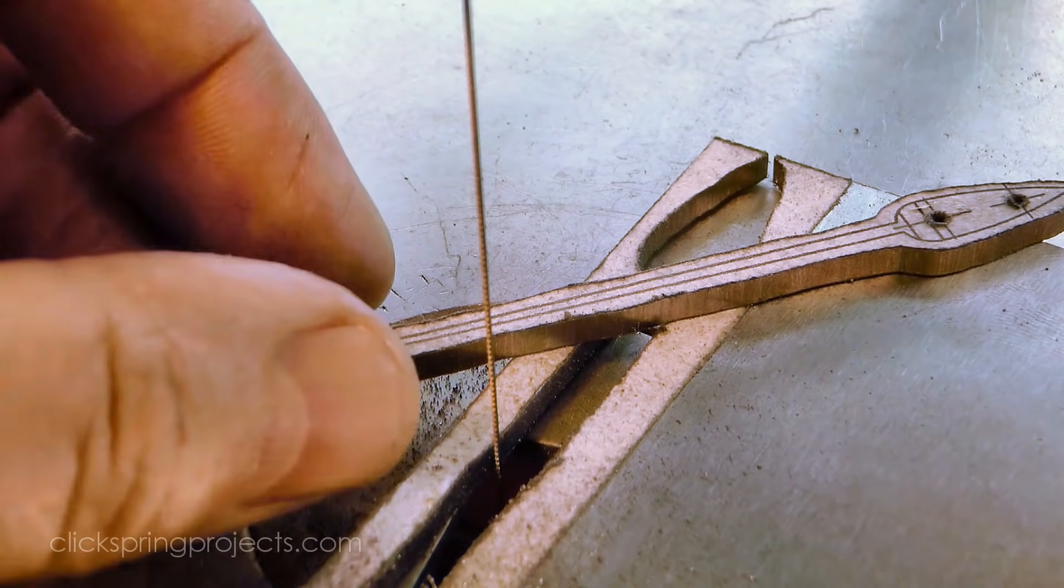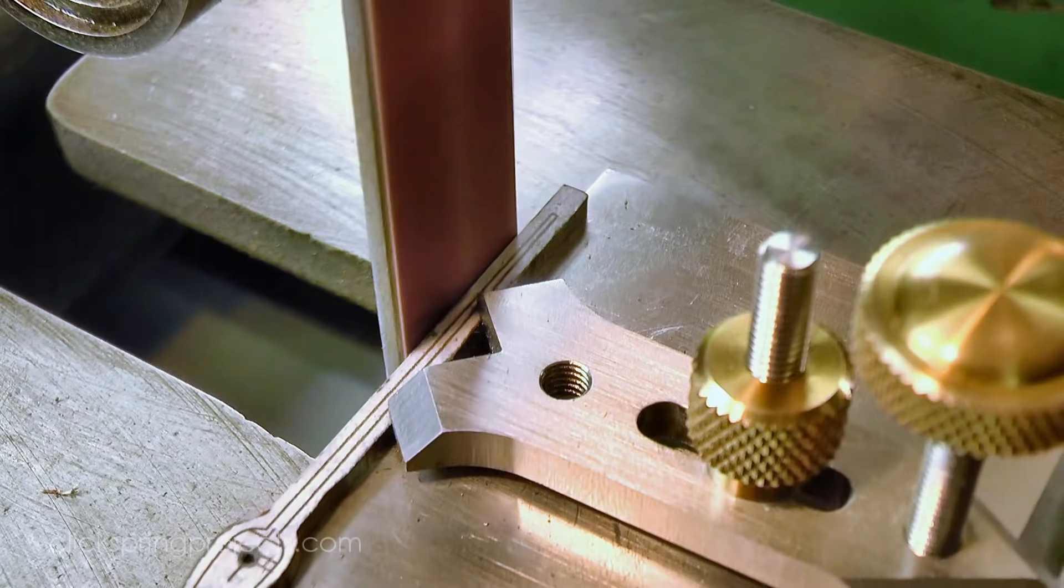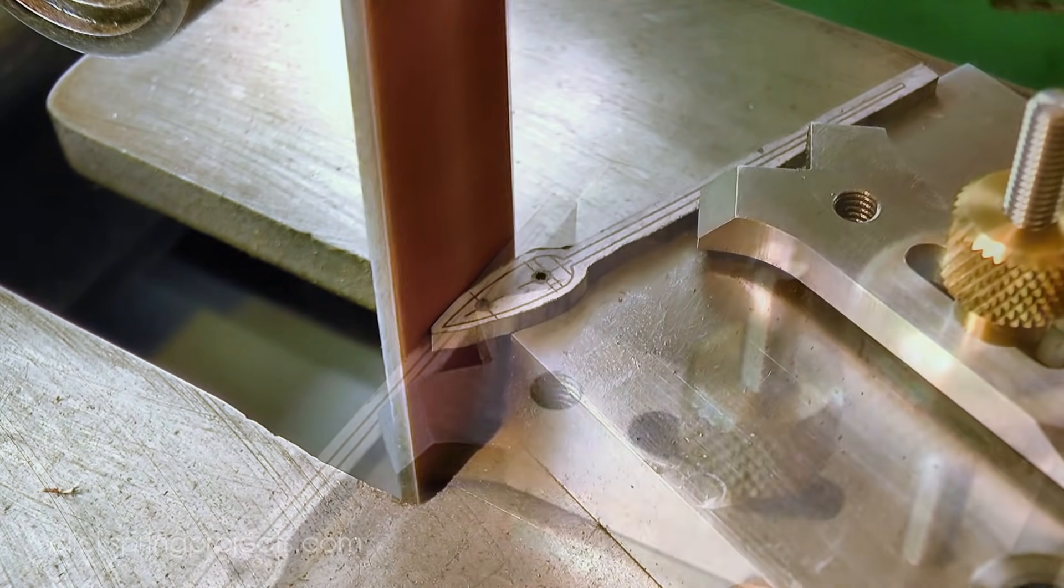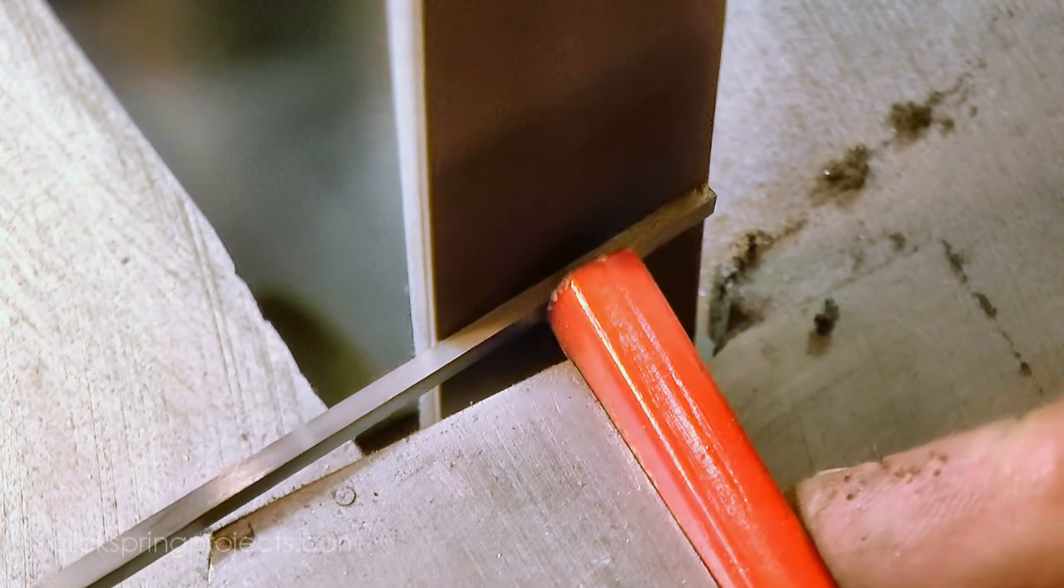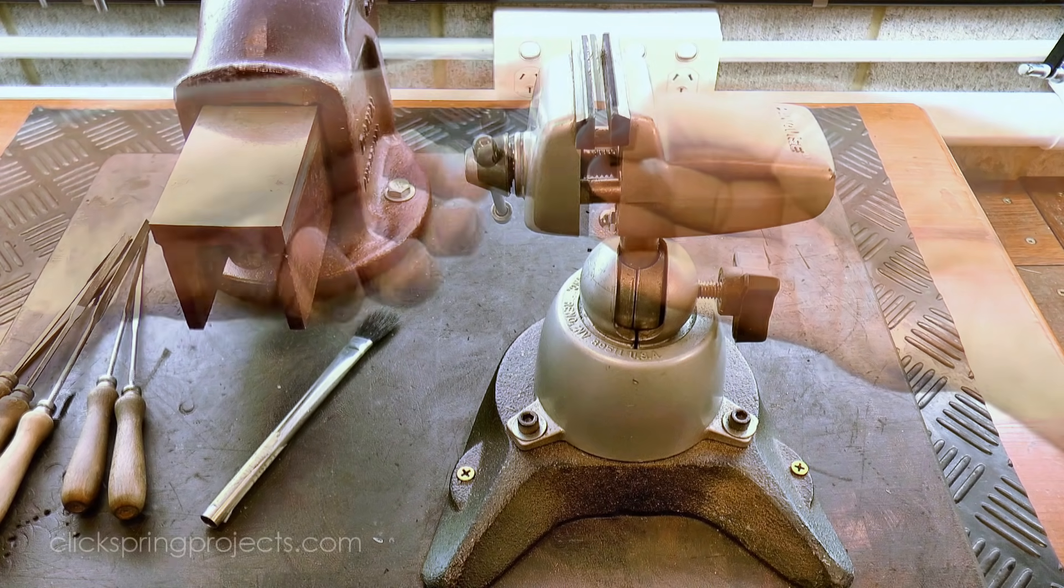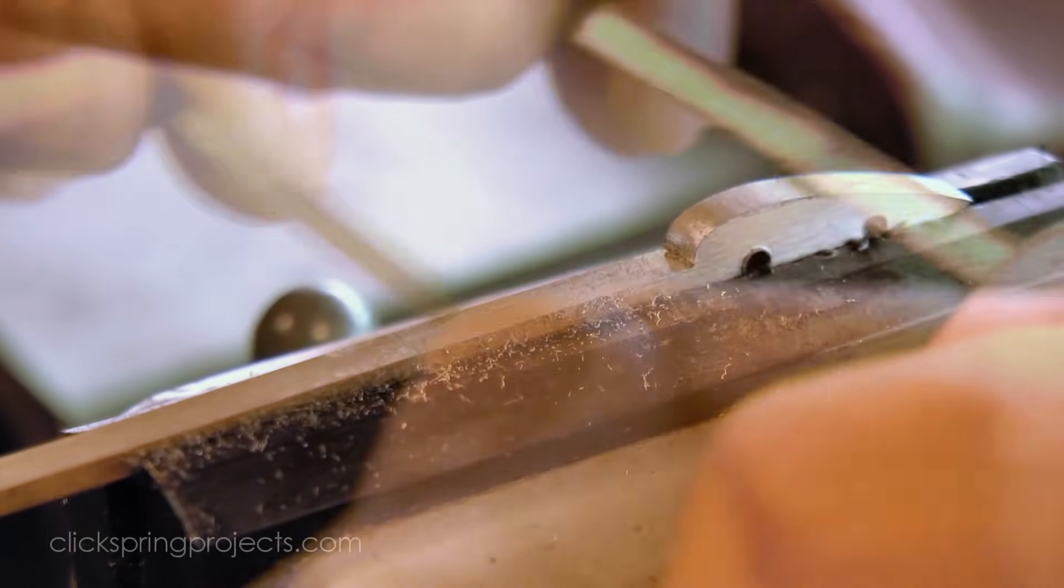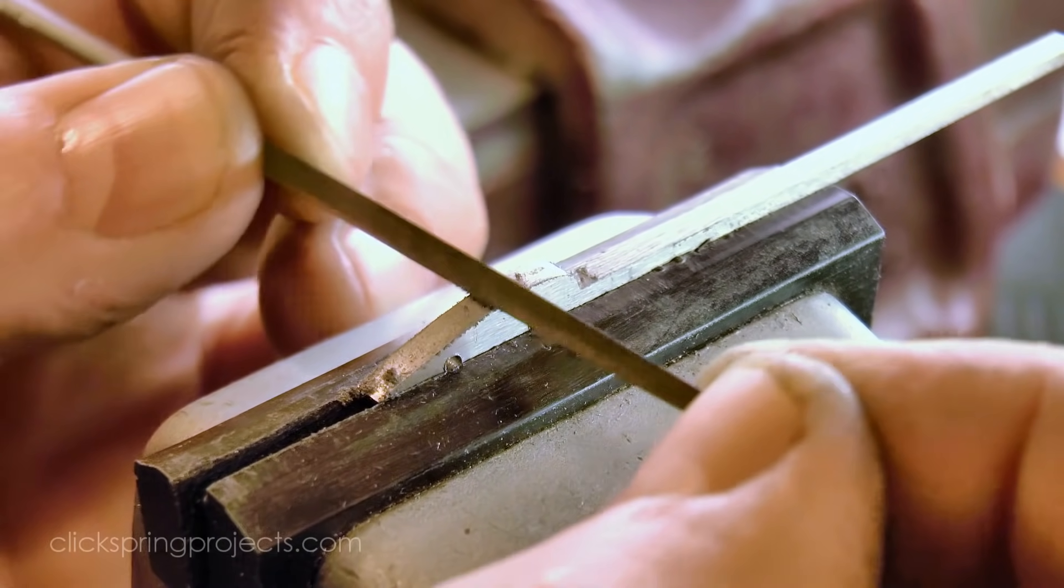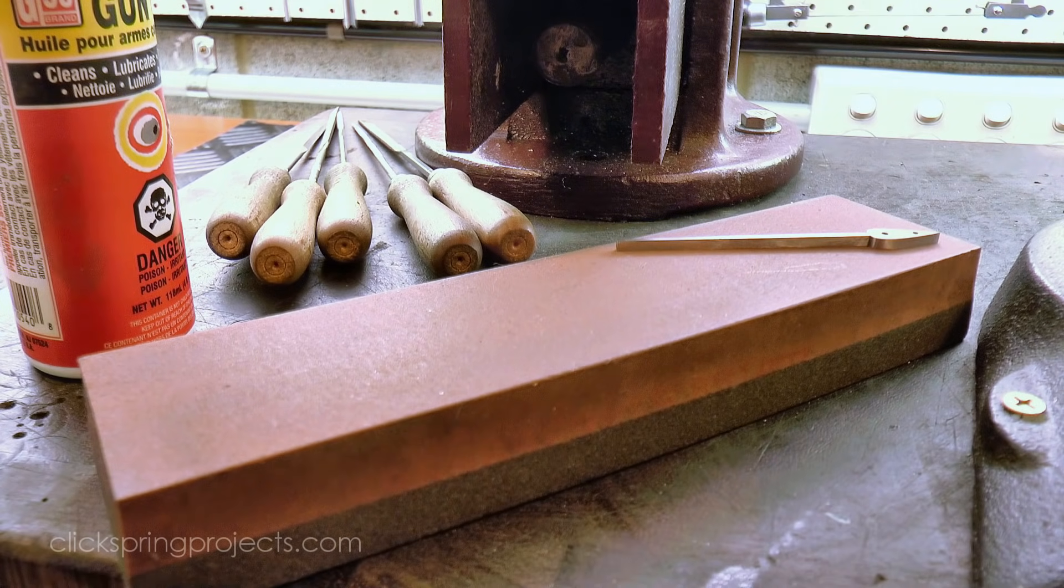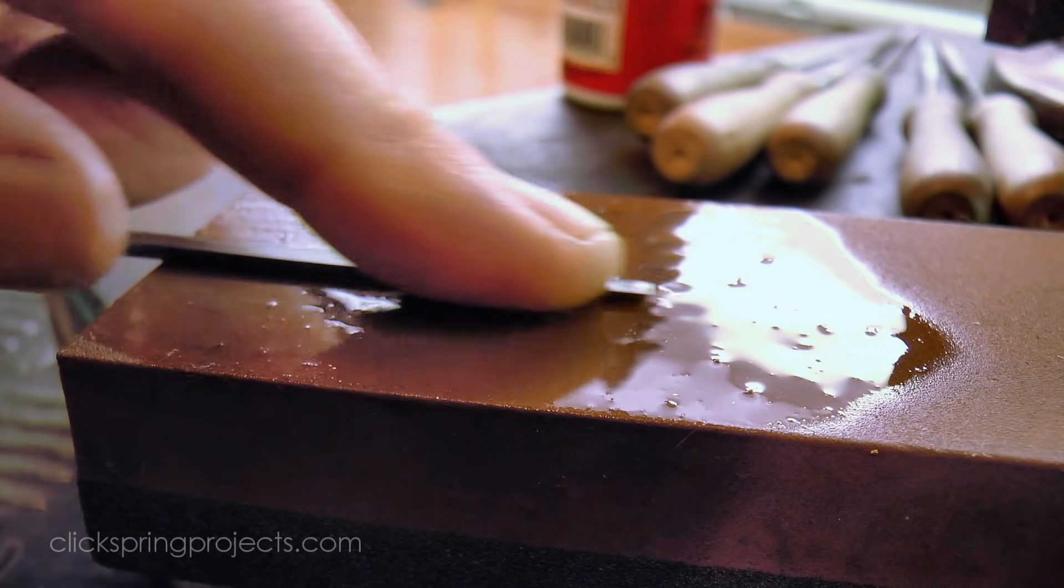And much like the click, I roughed out the part on the scroll saw and then brought it closer to the line on the belt sander. The rest of the profile work was done with needle and escapement files. And at this point of the process, the tail of the click spring was getting quite thin and difficult to hold, so I found it easiest to bring it to final dimension by lapping it on the India stone.